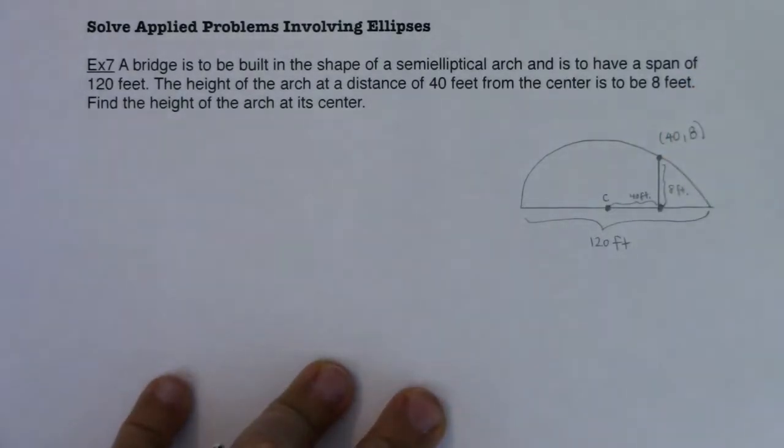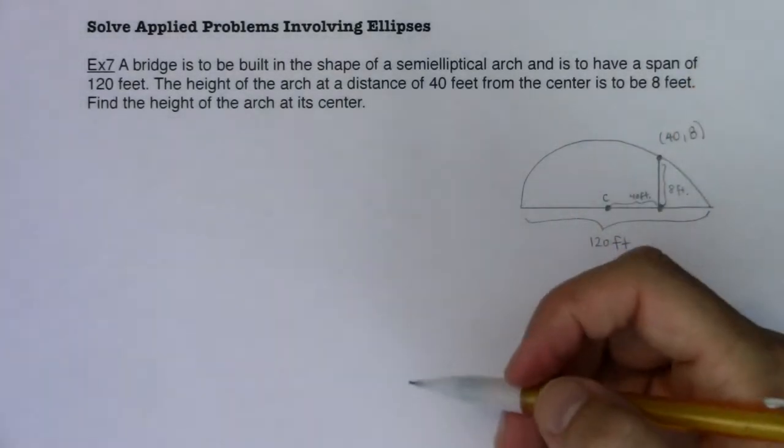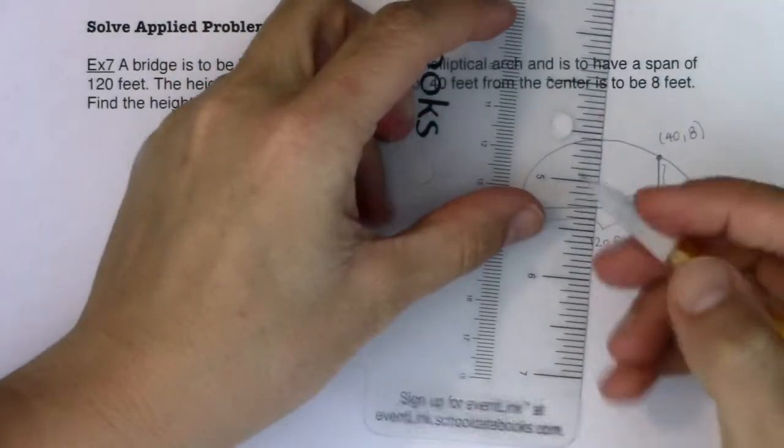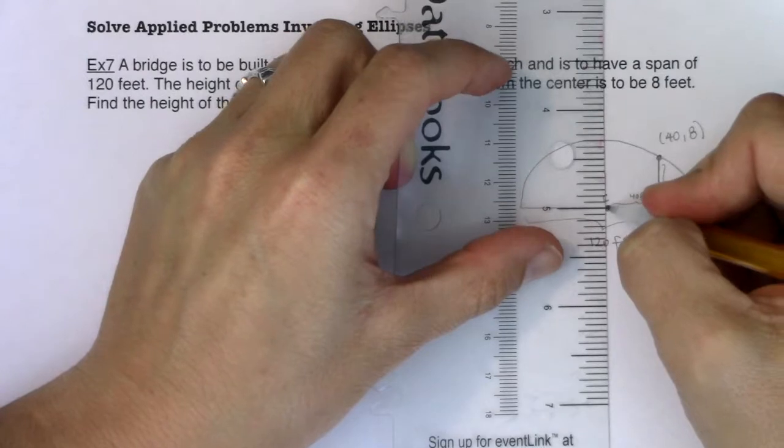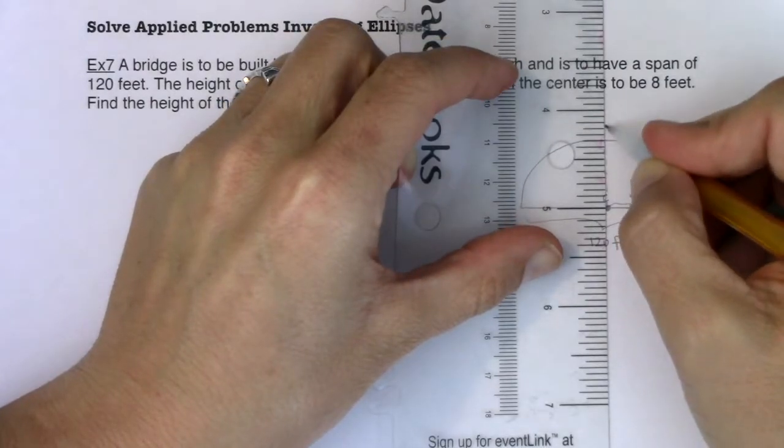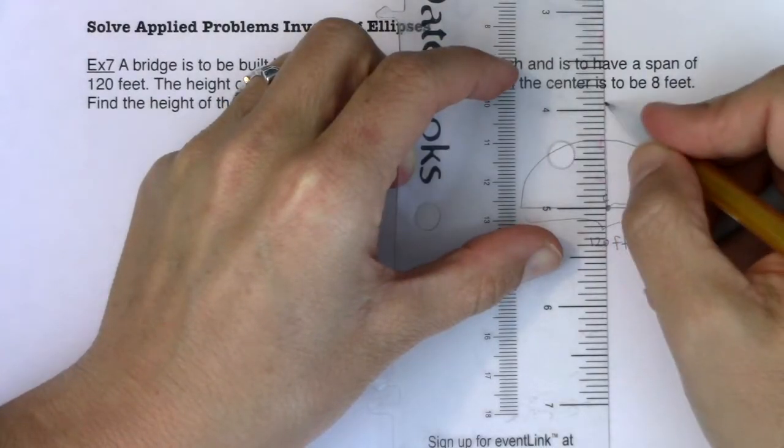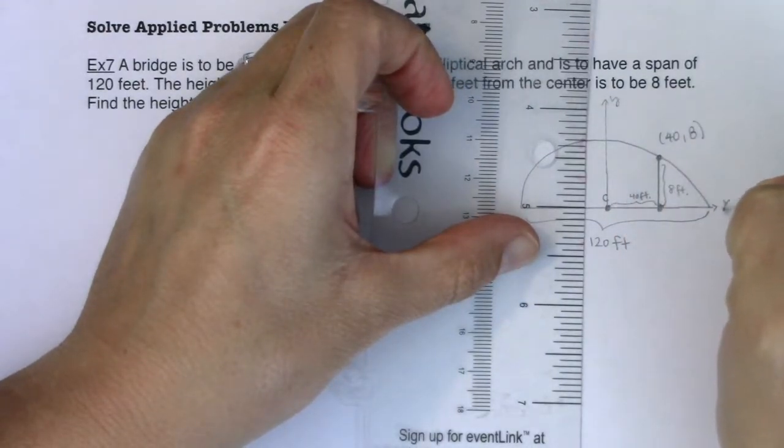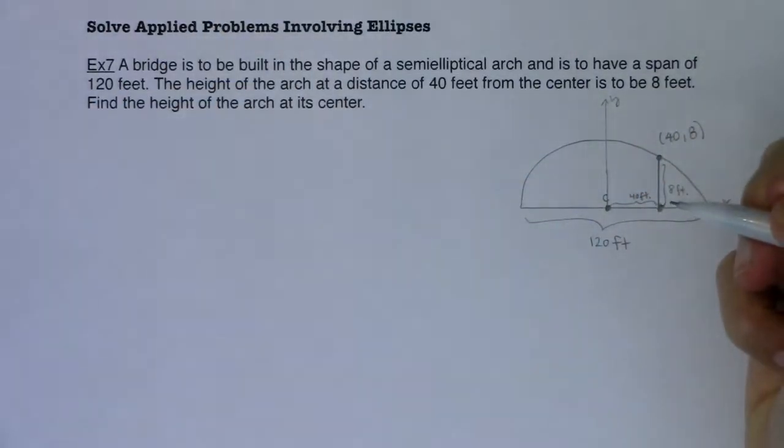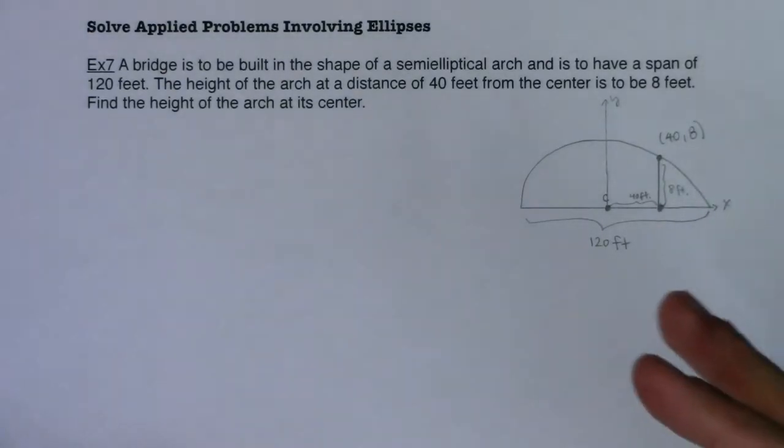I'm gonna pretend my center is the origin. If that center was the origin this would be the ordered pair 40 comma 8. Since it doesn't specify where my center is, I'm just gonna go ahead and say that my center is the origin. So if I was gonna put this on the xy plane I would build this out to be the y-axis, I'd build this out to be the x-axis and I would make my center 0, 0 just so that my numbers were nicer.